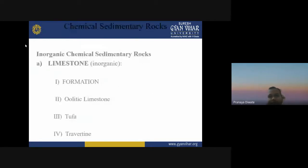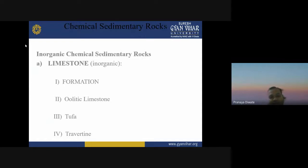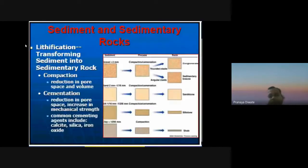Inorganic chemical sedimentary rocks include limestone, which forms through inorganic chemical processes such as oolitic limestone. Then we also have sediment and sedimentary rock categories to consider.